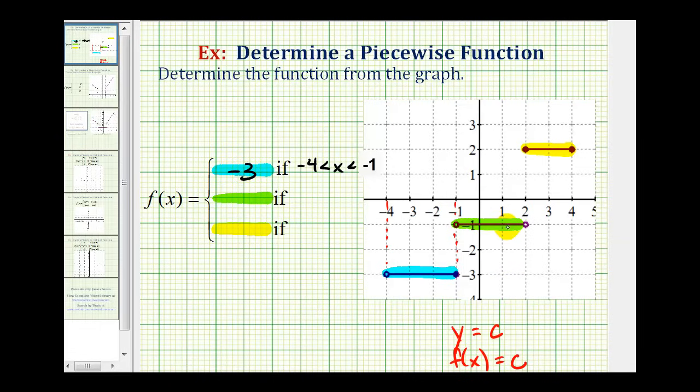Now looking at the green piece, notice how we'd have the function y equals negative one, or f of x equals negative one. And the interval for this piece is from negative one to positive two. Notice how it does not include either endpoint, that's why we have open points on each end. So the interval is going to be when x is greater than negative one and less than positive two. This is the interval for which f of x equals negative one.